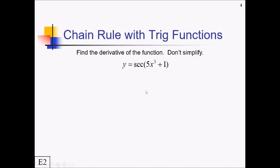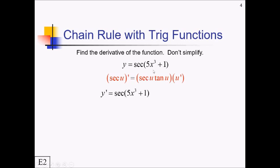Here's another example. We need the chain rule again — we've got another composition of functions. Our general setup is taking the derivative of secant of some inner function, which gives secant u tan of u times u prime. So we get secant of 5x cubed plus 1 times tan of 5x cubed plus 1, that's the derivative of the outer function, times the derivative of 5x cubed plus 1, which is 15x squared.